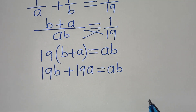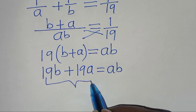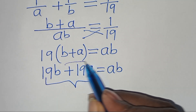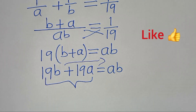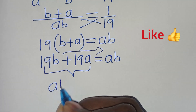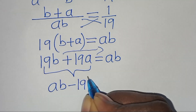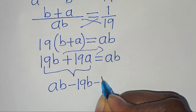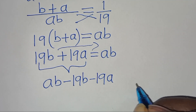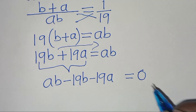The next step is to take 19b plus 19a to the right-hand side, so that we have ab minus 19b minus 19a equals 0, to make a factor of the form (a minus 19)(b minus 19).